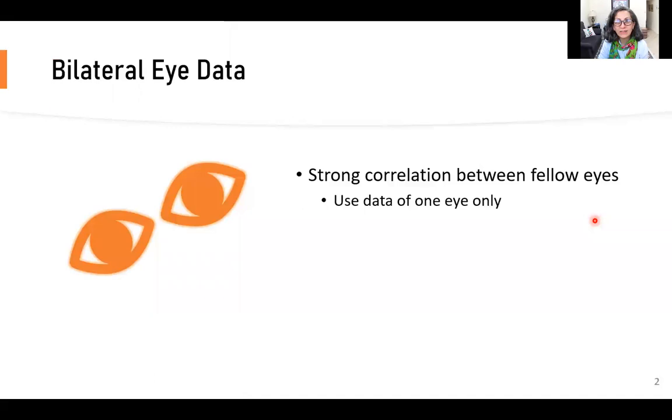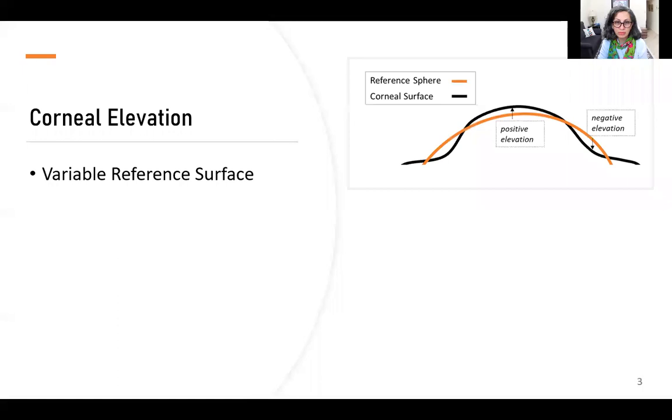In handling bilateral eye data with strong correlations, it's common practice to analyze the data from only one eye. But some studies have suggested that lack of symmetry should be interpreted as a clinically significant finding. However, elevation symmetry studies have some major limitations.